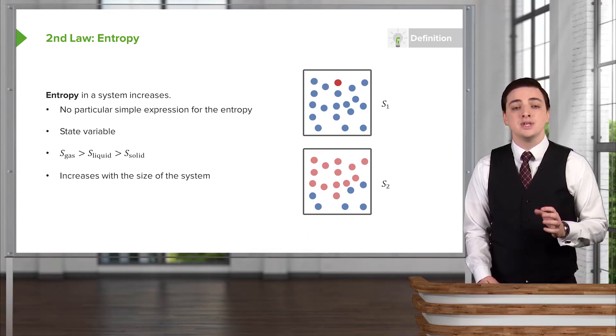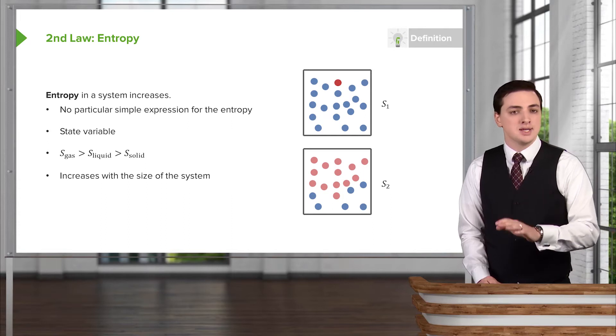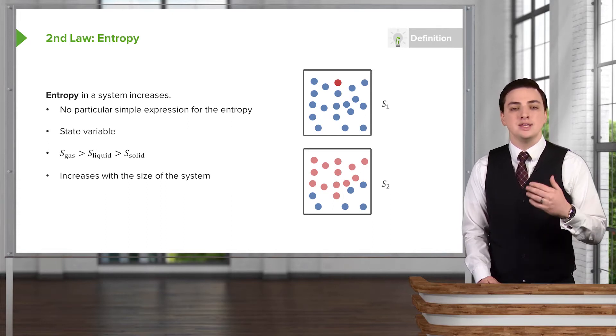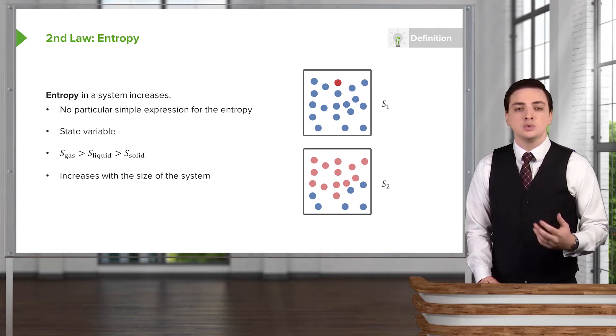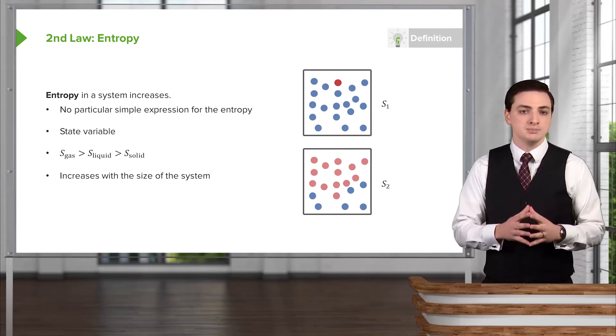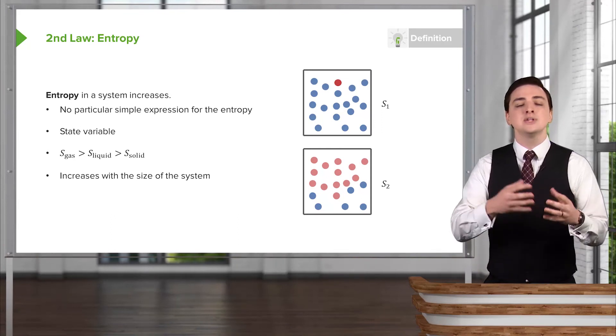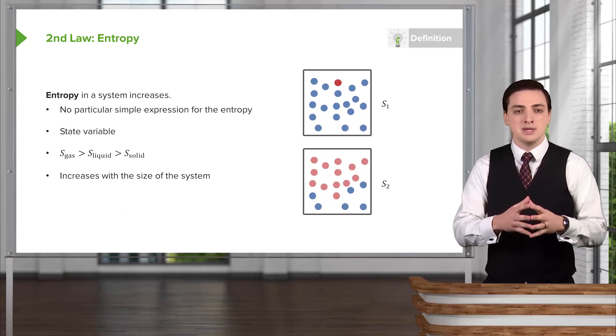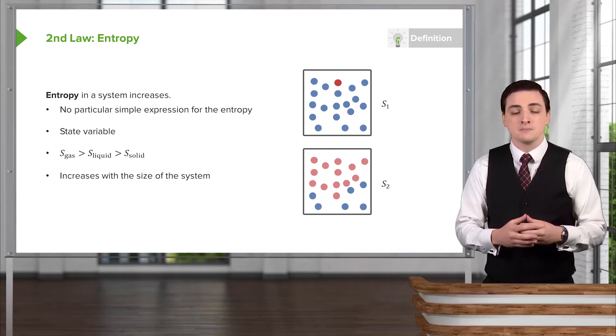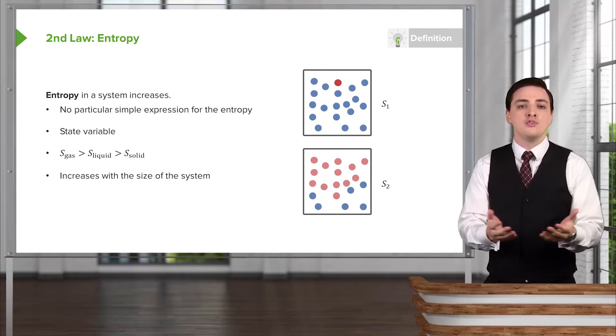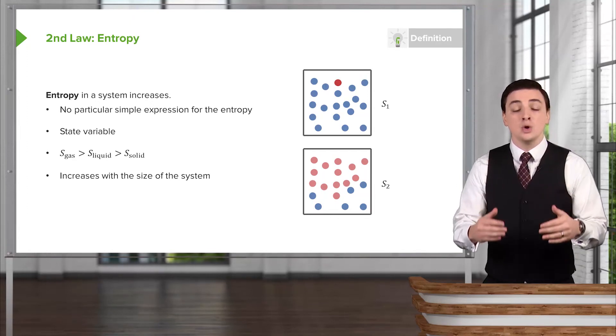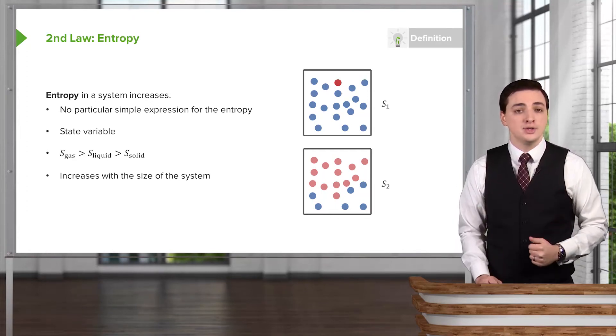We would also say that the entropy, unlike something like the temperature, would increase with the size of the system. So what do I mean by this? If I take a system which has a particular entropy, and suppose I double the size of that system and maybe have two versions of that same system, the entropy of this new overall system, where I've doubled it, would now be double the original entropy.